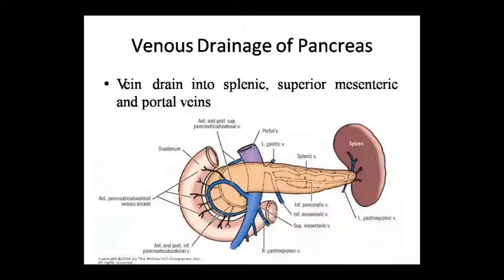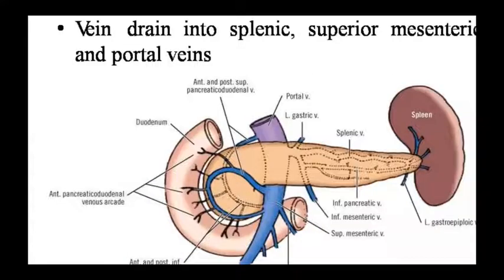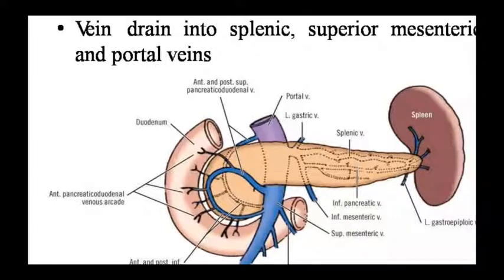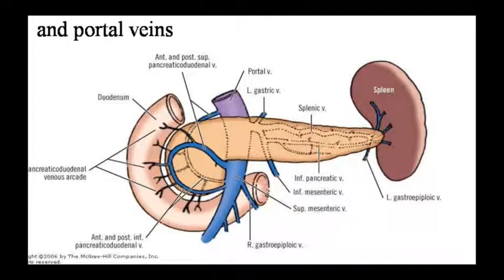Looking at the diagram, the portal vein is shown on the upper right. Shown are the anterior and posterior superior pancreaticoduodenal vein, left gastric vein, splenic vein, inferior pancreatic vein, inferior mesenteric vein, superior mesenteric vein, left gastroepiploic vein, right gastroepiploic vein, and anterior and posterior inferior pancreaticoduodenal veins.